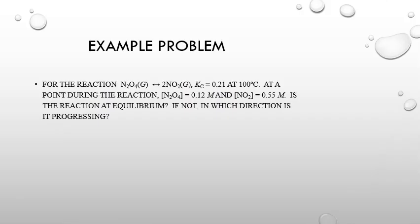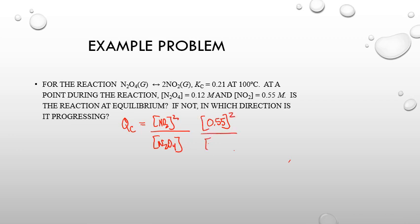Let's look at an example problem. For the reaction N2O4(g) → 2NO2(g), the Kc is 0.21 at 100°C. At a point during the reaction, the N2O4 concentration is 0.12 M and the NO2 concentration is 0.55 M. Is the reaction at equilibrium, and if not, in which direction is it progressing? We set up Qc exactly as we would Kc: Qc equals [NO2]² divided by [N2O4].